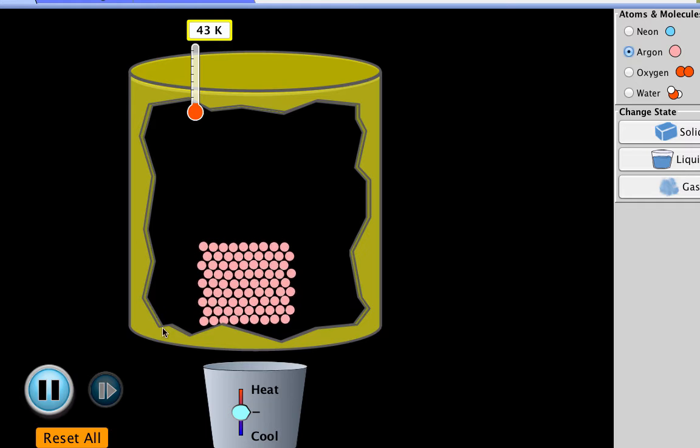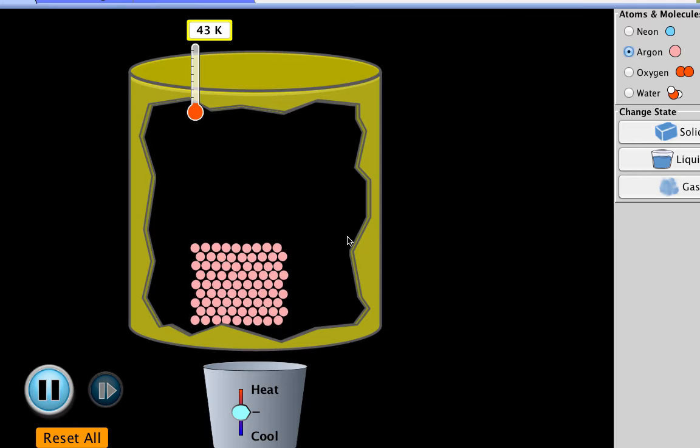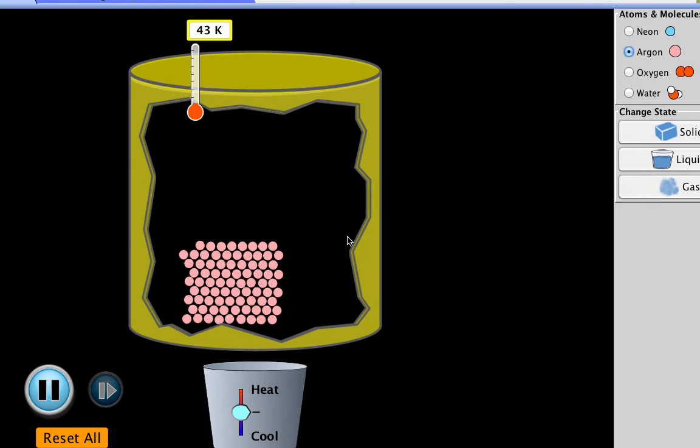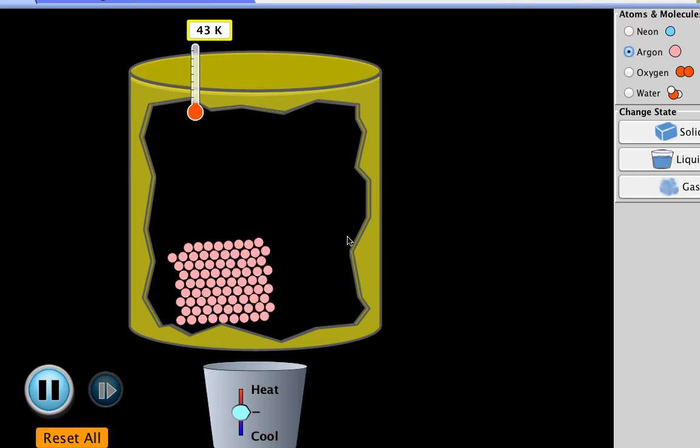Starting with a solid, you see that the particles are very close together. This means that there are strong attractive forces between the particles, holding them close to one another. You can kind of think about them as being sticky or sticking together. The particles are also really well organized and they're not able to move very much. Notice these particles are just vibrating in place, not moving around one another.